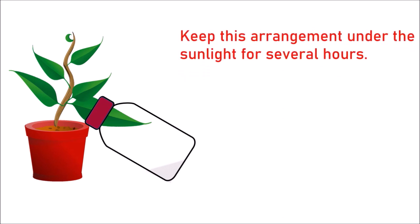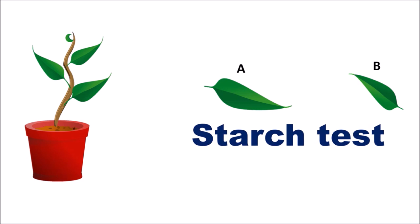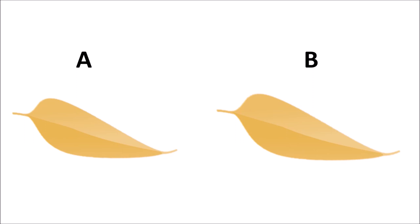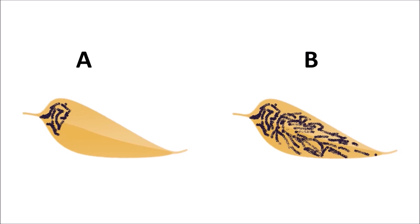Keep this arrangement under sunlight for several hours. After completion of the experiment, take the leaf which was made unavailable of carbon dioxide, as well as another leaf which was provided with all the requirements of photosynthesis, and conduct a starch test for both leaves. Leaf A, which lacked carbon dioxide, shows no bluish-black patches on the part inside the bottle, whereas leaf B shows bluish-black patches throughout the leaf.